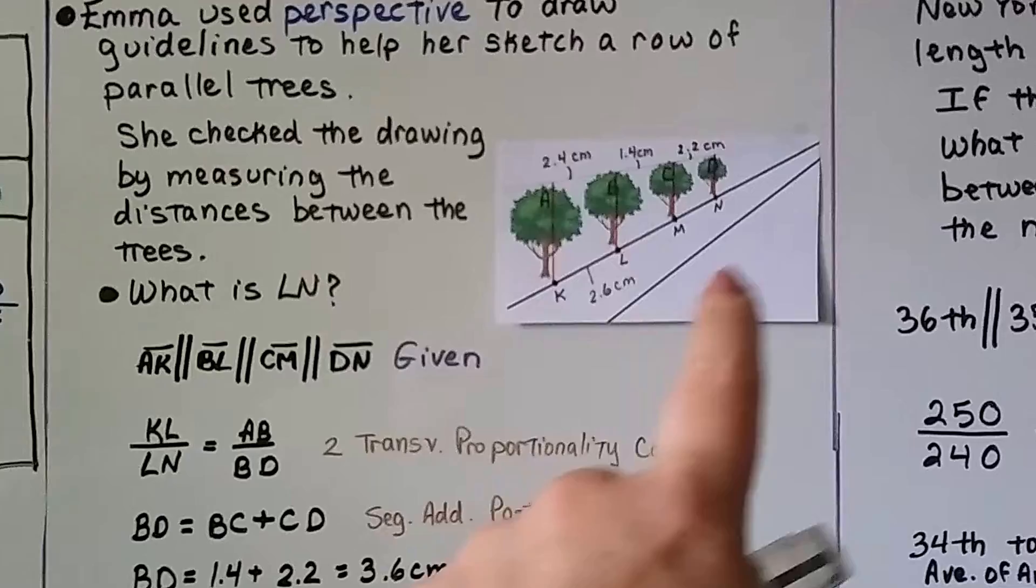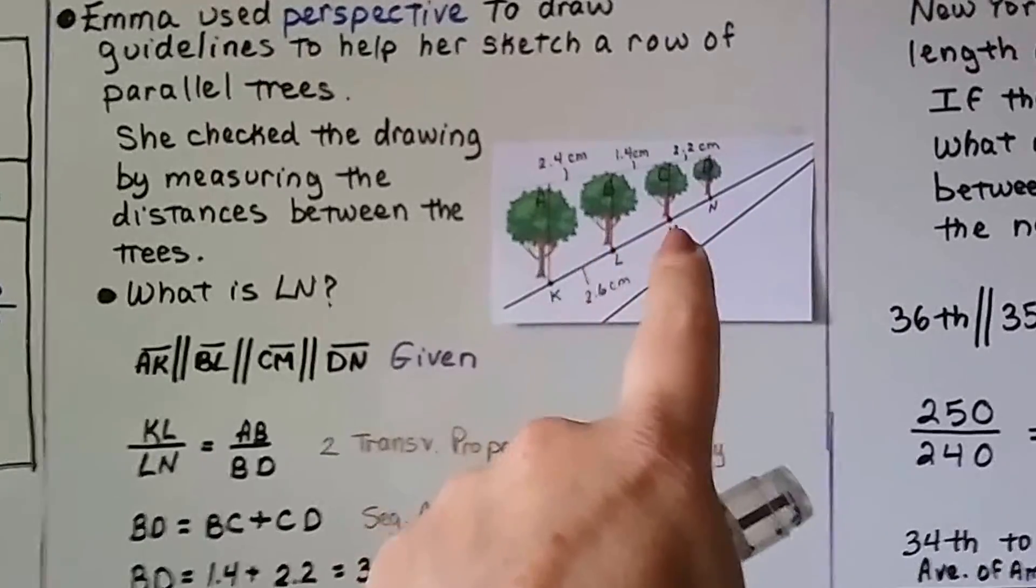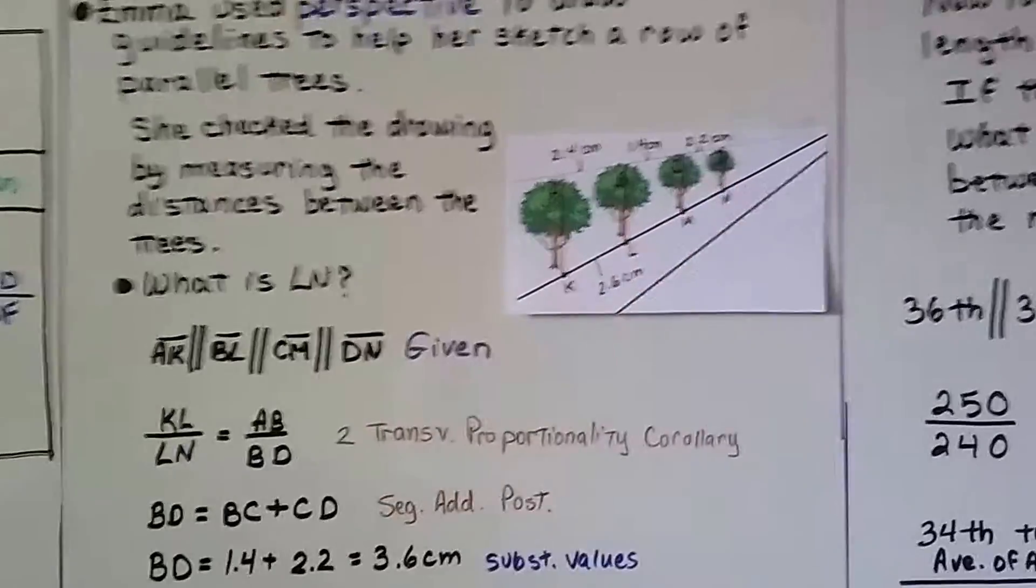She checked the drawing by measuring the distances between the trees. We need to find LN. So it's going to skip over M. We need this segment right here, LN.